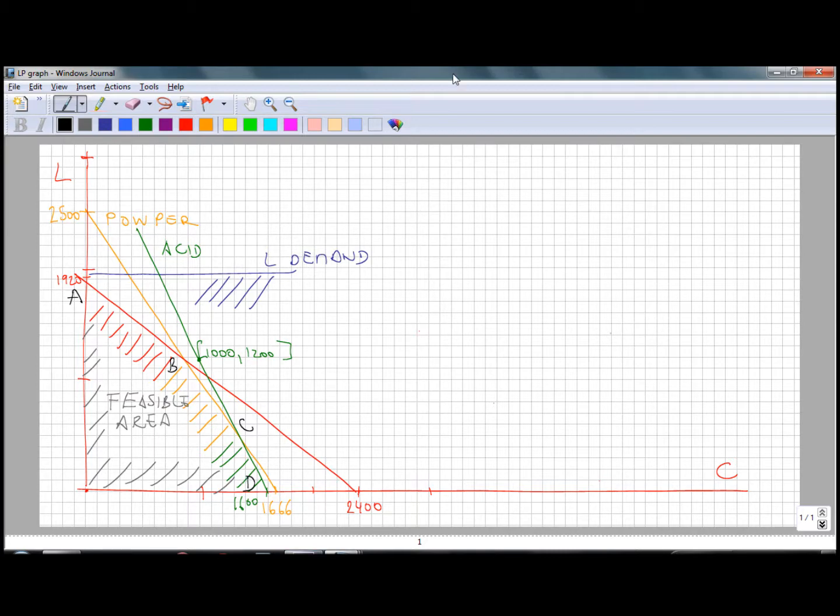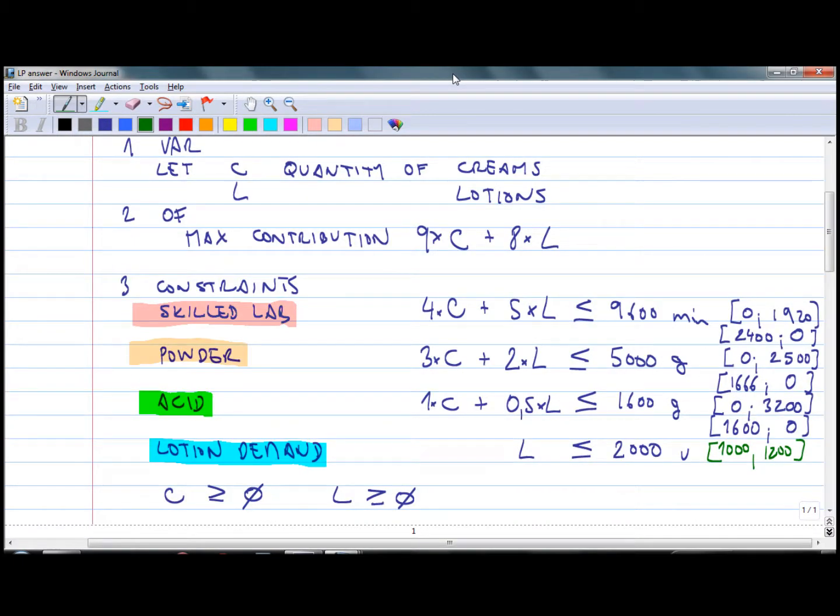We can determine the optimum point by drawing the objective function into the graph. The objective function is 9C plus 8L. It doesn't equal anything, but we can set it to equal to any figure which we like. Let's put 10,000. Now we can find out two coordinates. If C equals 0, L is going to be 1250. If L equals 0, C is going to be 1101.